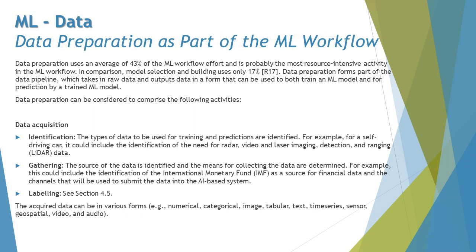The acquired data can be in various forms, including numerical, categorical, images, tabular, text, time series, sensors, geospatial, videos, and audio. There are several ways to train an ML model depending on what your AI-based system requires. For example, captcha-based outputs involve images — like when Google asks you to identify taxis, bridges, or zebra crossings. You can also have numerical values or categorical data, such as distinguishing cats from dogs.